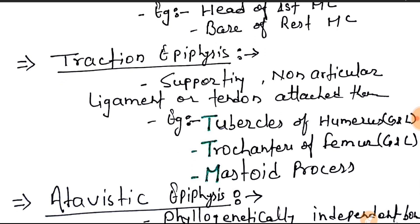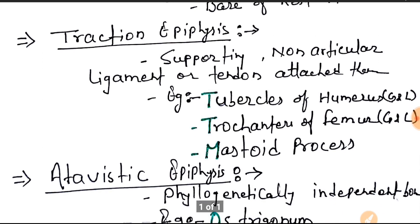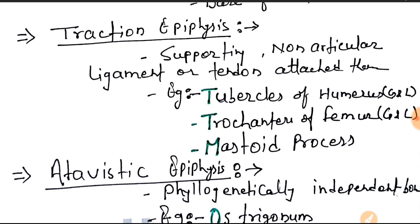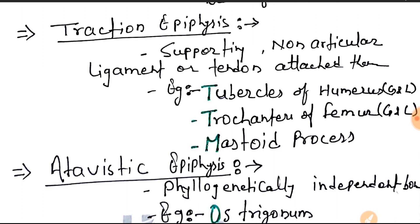Next one is the traction epiphysis. Traction epiphysis are supporting in nature, non-articular, and are attached with ligament and tendon. Example: you can remember it by the mnemonic TTTT or MTT. T for the tubercle of the humerus — that means greater tubercle or lesser tubercle. Next one is the trochanter of the femur — greater and lesser trochanter. Next one is the mastoid process.